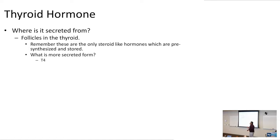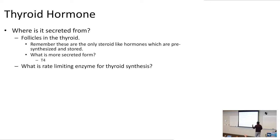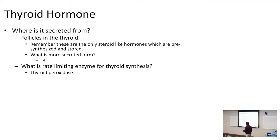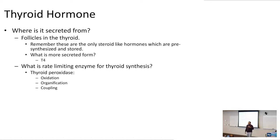The more secreted form is T4, whereas the more active and more potent form is T3. The rate-limiting enzyme for thyroid synthesis is thyroid peroxidase. Thyroid peroxidase is going to catalyze the reactions for oxidation, organification, and coupling.